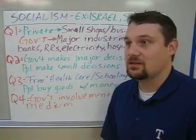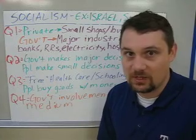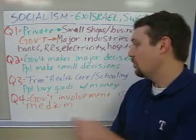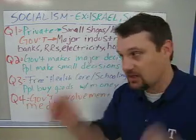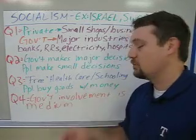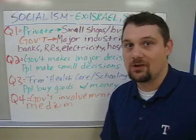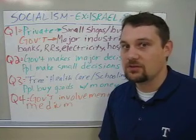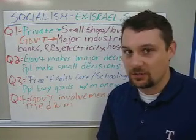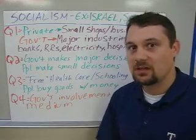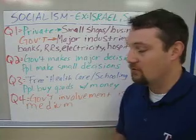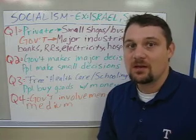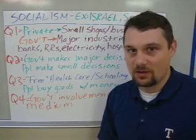Just like in this country, your public school is not really free because your parents pay taxes that fund the schooling. But in a socialist society, people get a lot of free things. People also buy goods with their own money from their jobs — if they want to buy 50 cases of apples, they can do that if they have the money. So the government doesn't decide what individual goods you get or where you live. It is a mix between capitalism and communism. The level of government involvement is medium — the government is involved in major industries, but little everyday small businesses are not really affected so much.